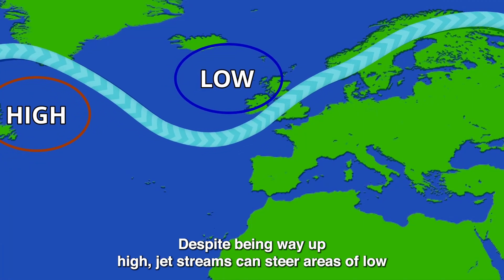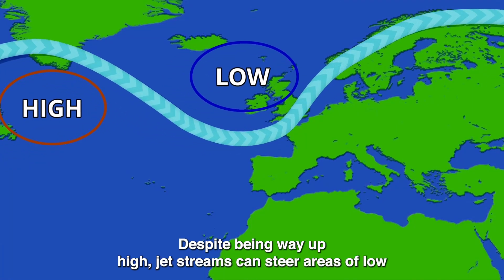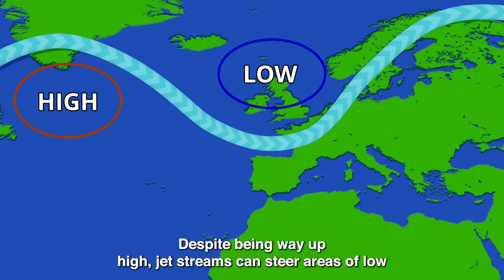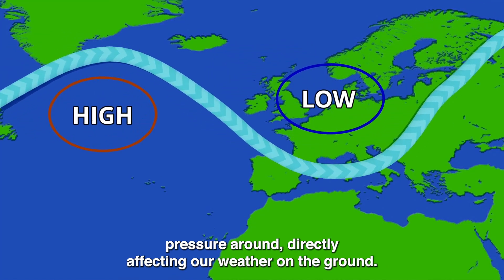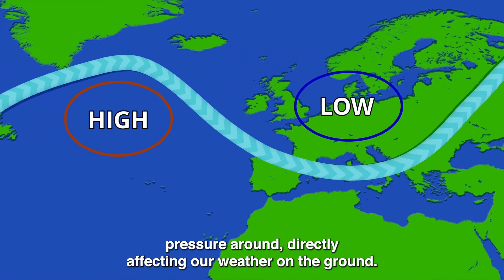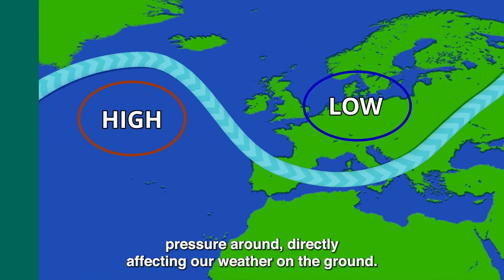Despite being way up high, jet streams can steer areas of low pressure around, directly affecting our weather on the ground.